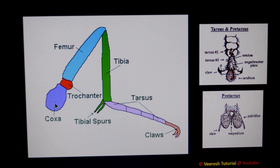Coxa is the first segment of the insect leg, which is articulated with the thoracic pleuron.